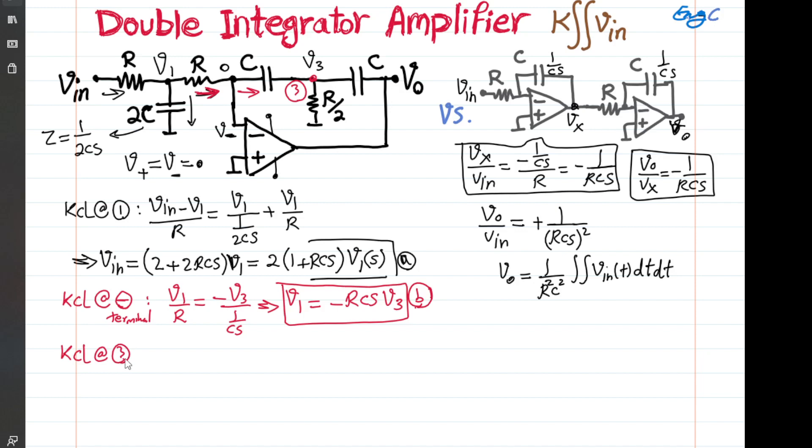There's a current coming through the cap. That should be equal to the current going through R over two and the current going through another cap. So we can write minus V3, zero minus V3 divided by 1 over CS equal to V3 over R over two. And then after that, we have V3 minus Vout over CS. So we have plus V3 minus Vout over 1 over CS, the impedance of cap.